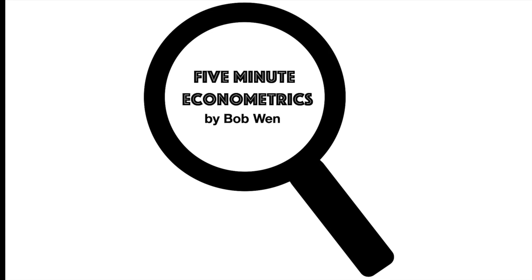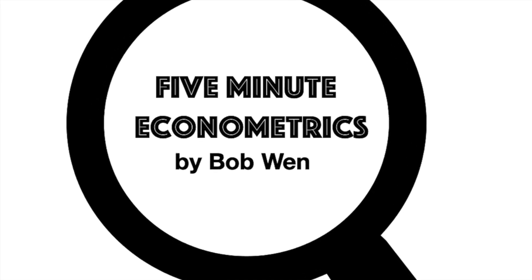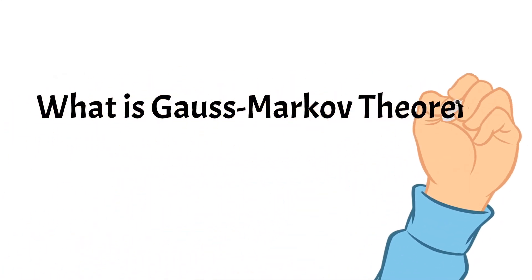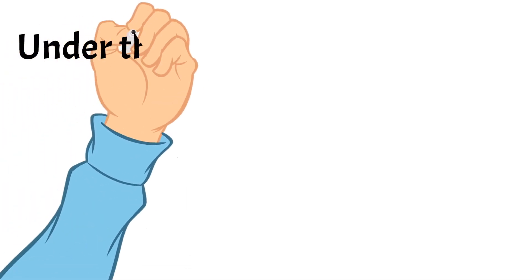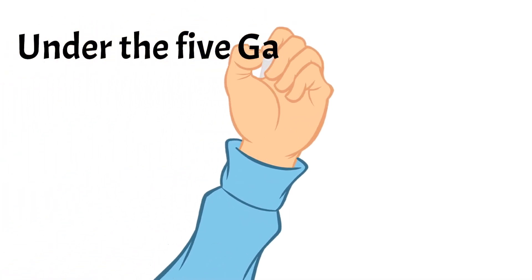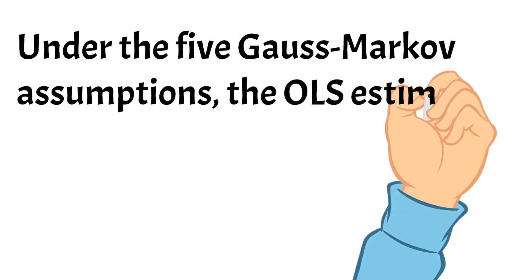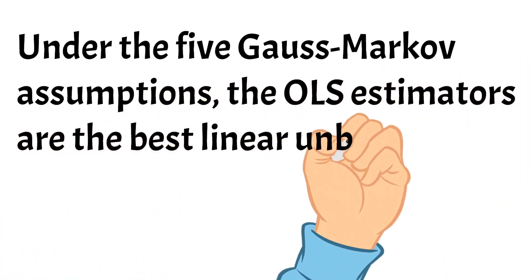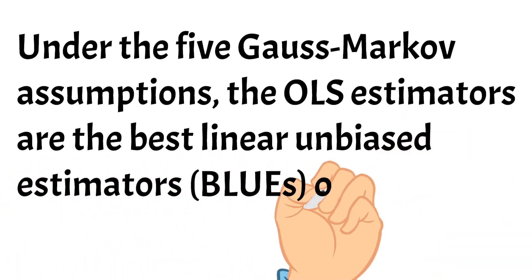Hi, I'm Bob. Welcome to the 5-Minute Econometrics. Today I will introduce the Gauss-Markov Theorem. The Gauss-Markov Theorem states that under the five Gauss-Markov assumptions, the OLS estimators are the best linear unbiased estimators of the population coefficients.